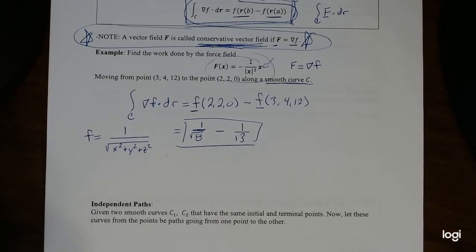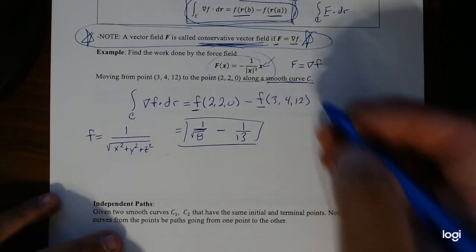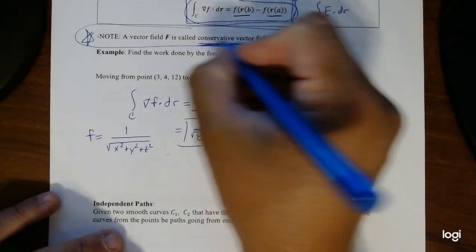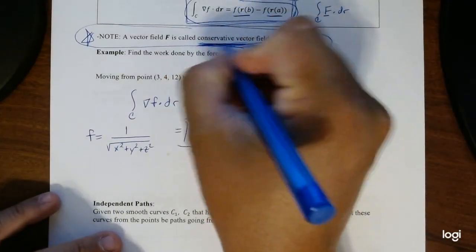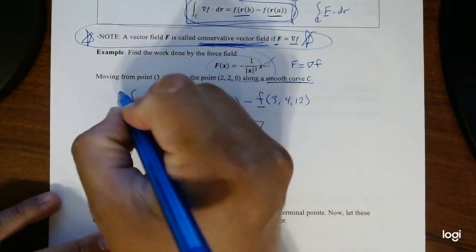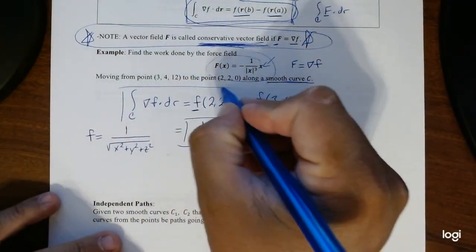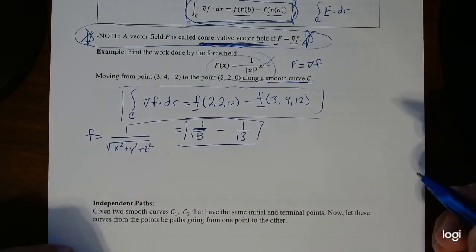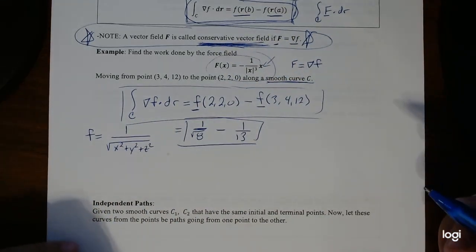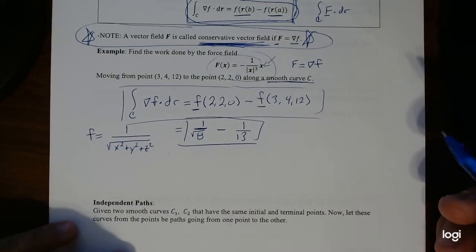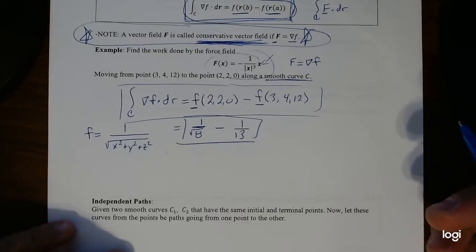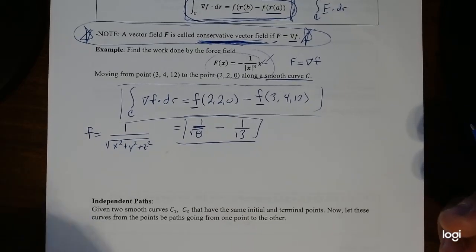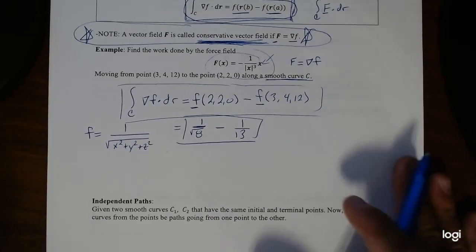Much less work to deal with, right? So now the question becomes: if I have a conservative vector field, our line integral becomes much easier to evaluate. That's what the whole section is about — how do we know if a vector field is actually a conservative vector field?